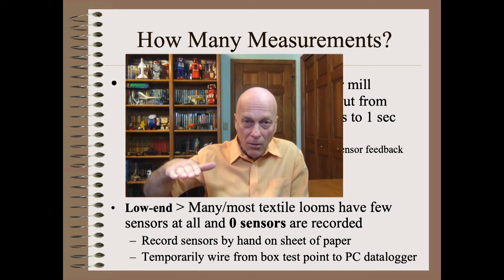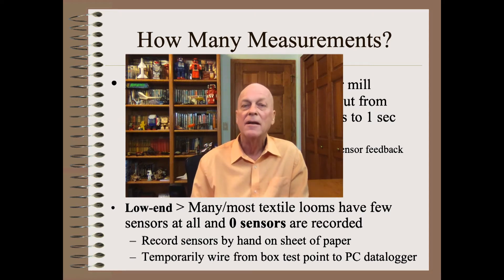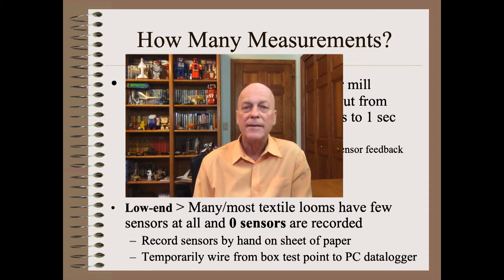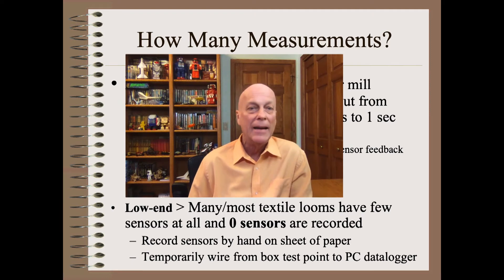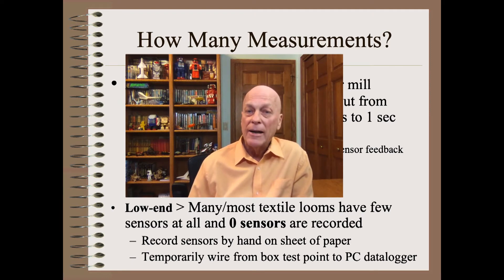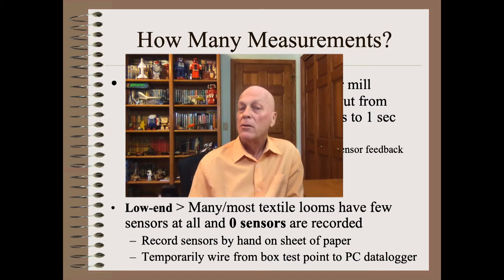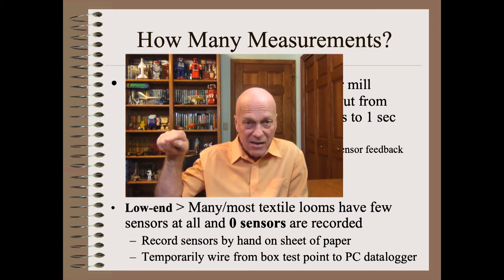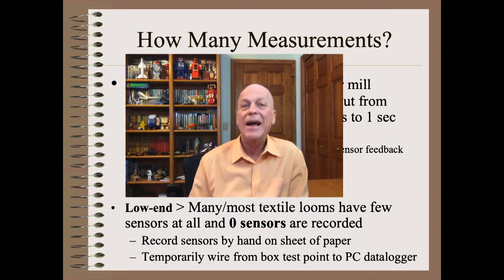At the low end, it's quite common to have very few or any sensors on a machine, and quite common that none of them are recorded in a retrievable way. In that case, you could record whatever sensor outputs you might have by hand on a sheet of paper if the required data rates are slow enough and the sensor is in any way related to the problem at hand. Alternatively, you could temporarily wire from a black box test point to a PC data logger, if there were even such a point to access.